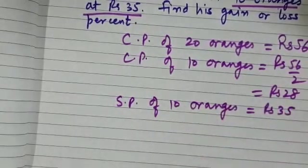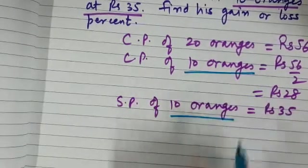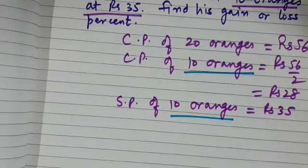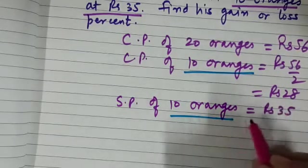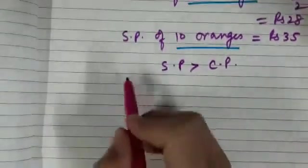So you have CP of 10 oranges and you have SP of 10 oranges. You can compare these two values and see which is more. Here you see that SP is more than CP, and in this situation there will be a gain.